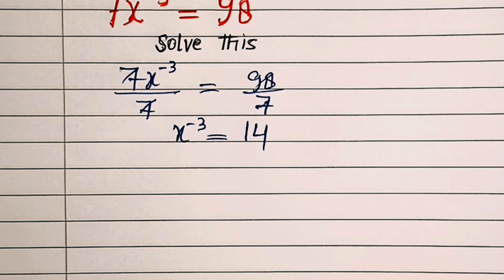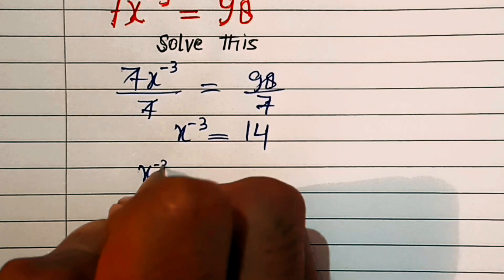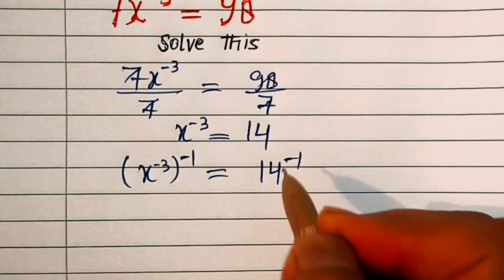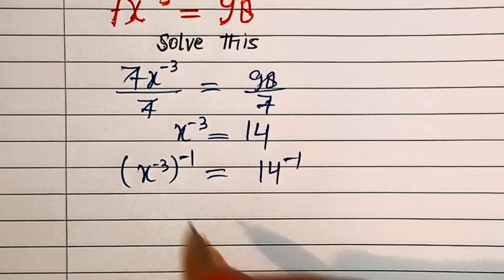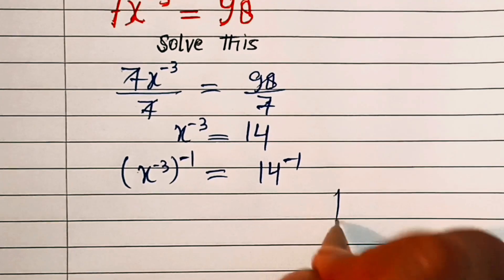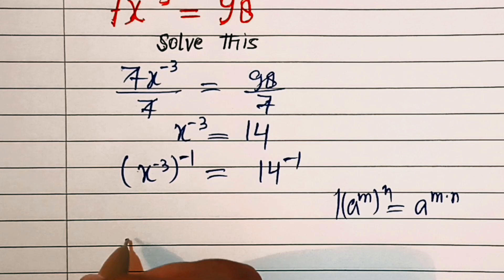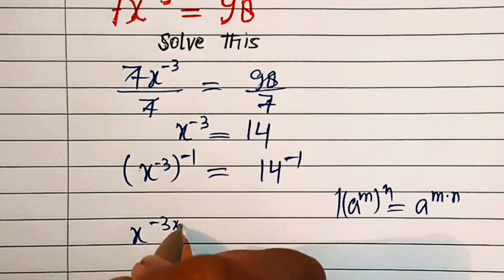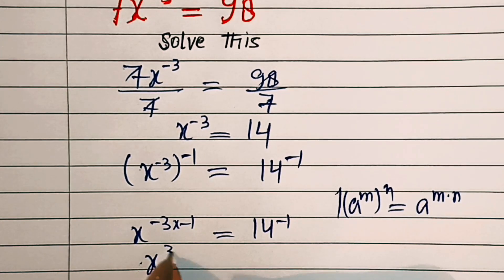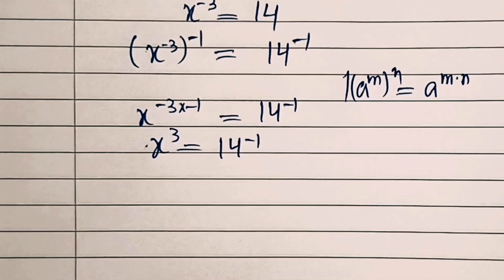In the next step, let's raise both sides of the equality to the exponent of minus 1. So it will be x power minus 3, power minus 1, equal to 14 power minus 1. Now on the left hand side, we will apply the exponent rule: a power m, power n, equal to a power m into n. So this is x power minus 3 into minus 1.